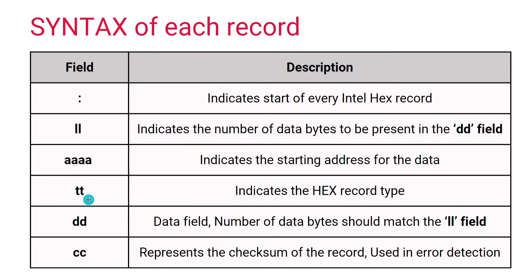The next field is the type field, which indicates the type of the hex record — based on the number present in this field there are various types of hex records. The fourth field is the data field (DD), which indicates the data, and the number of data bytes in the DD field should match the number specified in the LL field. Finally, we have the checksum field, which is especially useful for error detection.